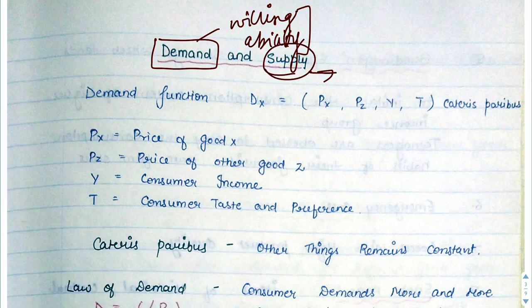Supply is the quantity of a commodity which the consumer is willing to buy and the supplier is also willing to sell at a fixed price. Next comes the demand function.